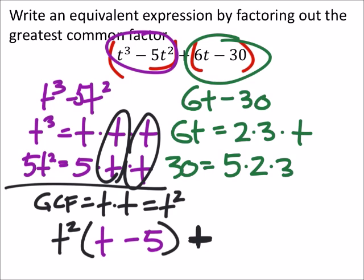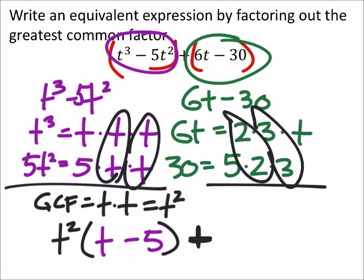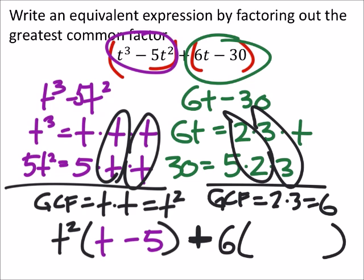Now when I find my greatest common factor for these two terms, I've got a 2 and a 3. So my greatest common factor here is 2 times 3, which is 6. So I'm going to pull that out and in parentheses, I have to start out with, and this is going to be minus. I've got my t right here, and then below I've got a 5.